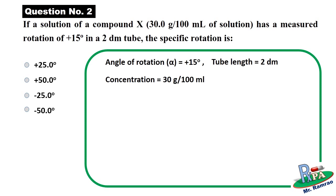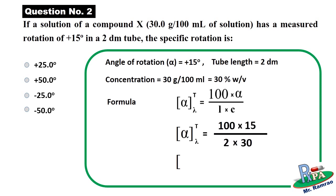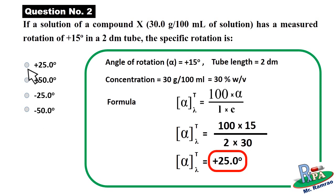Use the same formula as in the previous case since concentration is in percent weight by volume. Putting in the values and doing the simple calculation gives specific rotation = +25 degrees. The correct answer is the first option, 25 degrees.